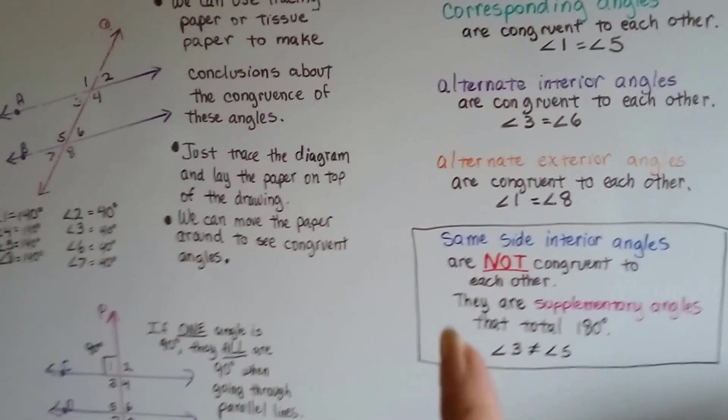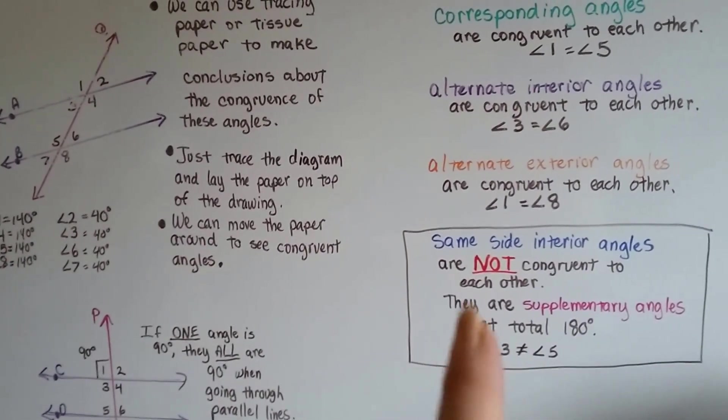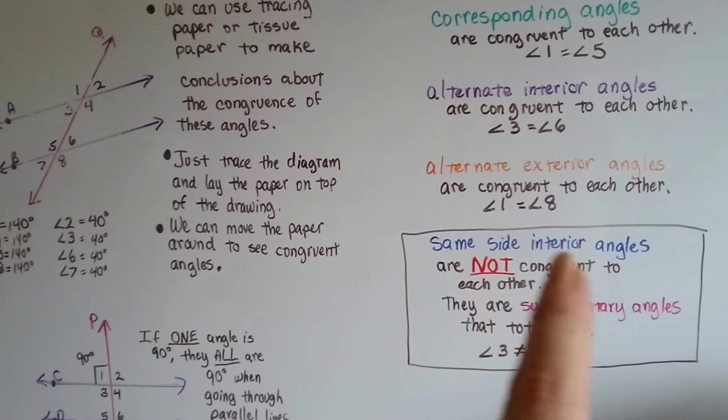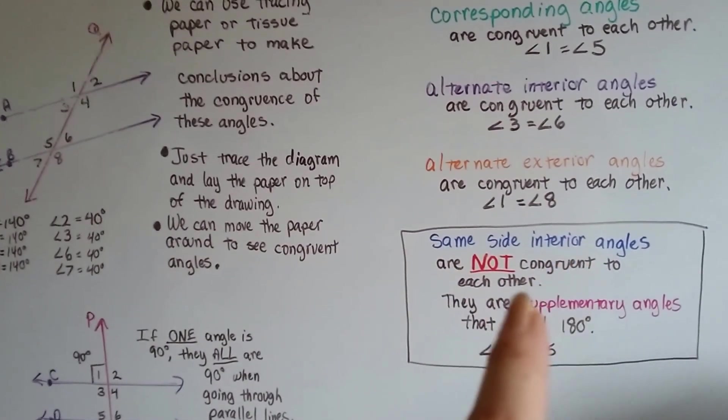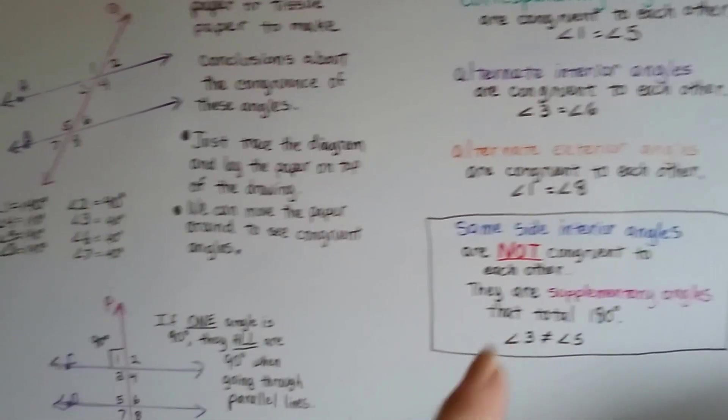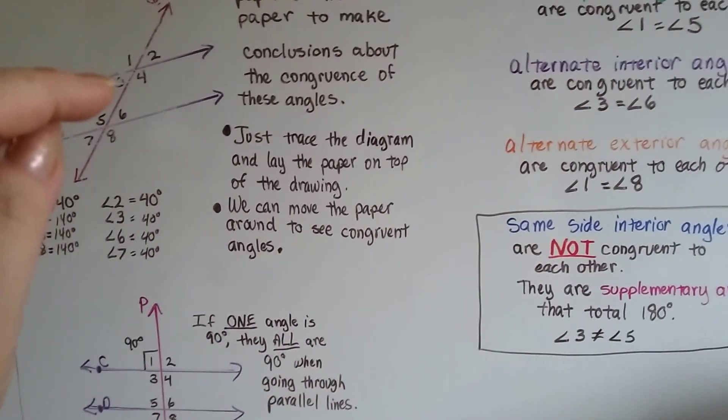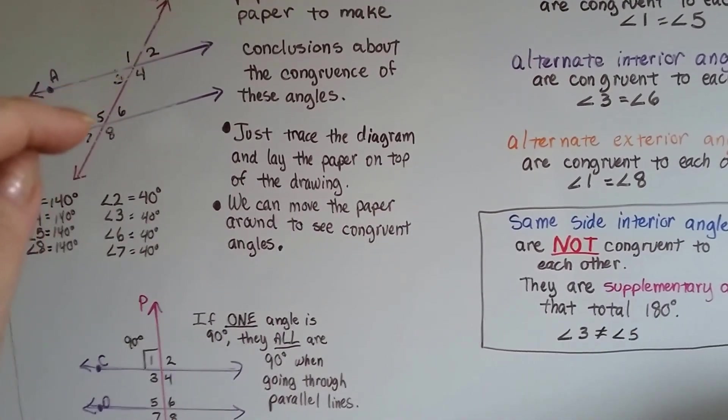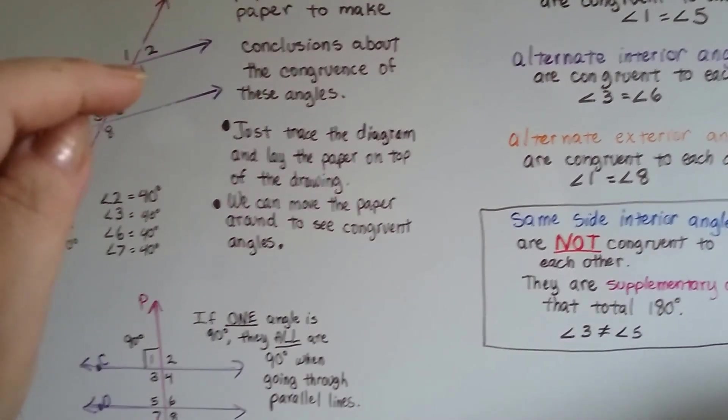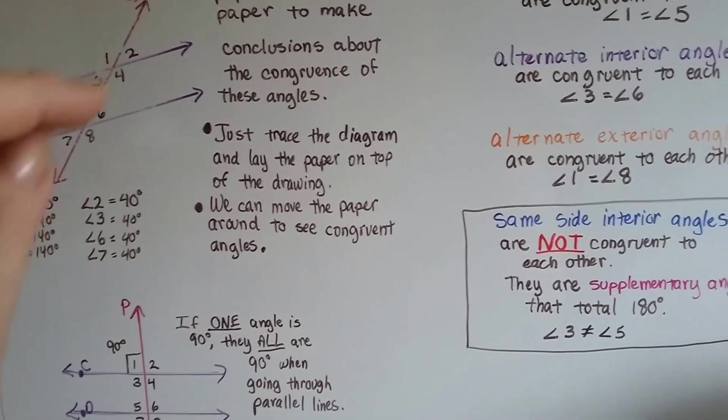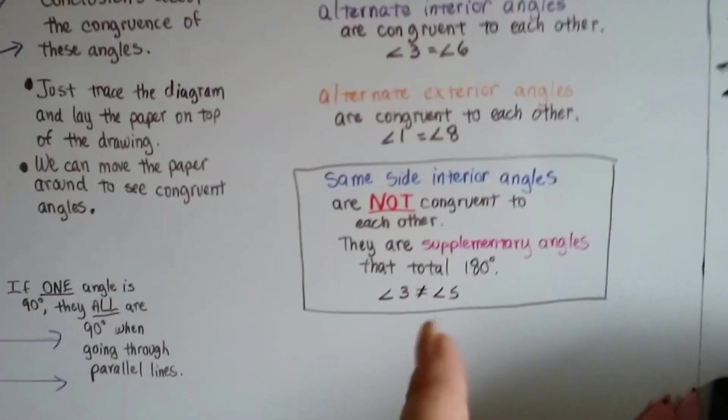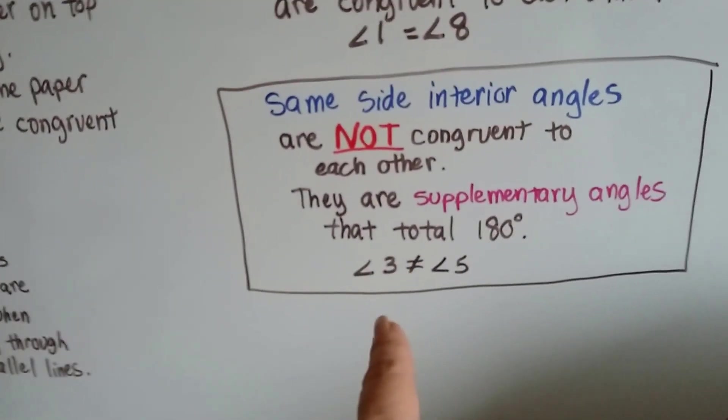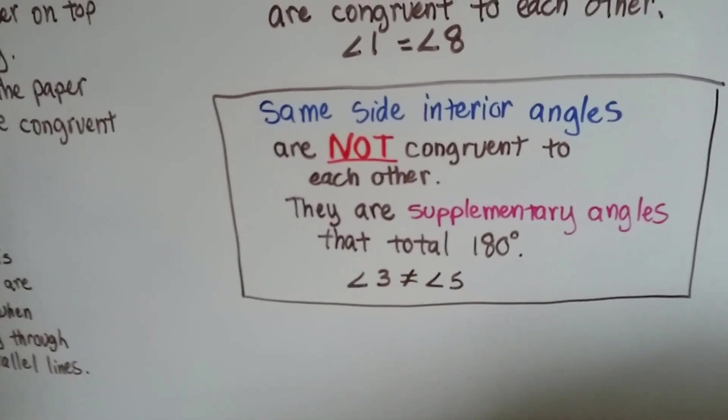But that last one, the same side interior ones. They're on the same side of the transversal. They're on the interior of the parallel lines. They are not congruent to each other. Angles 3 and 5 are not congruent to each other. This one's acute. This one's obtuse. This one's obtuse. This one's acute. They're opposites. They total 180 degrees. They are not equal to each other. Remember that little symbol means not equal.